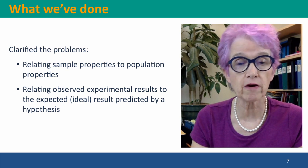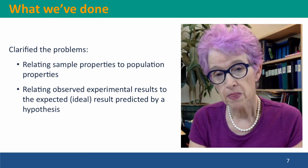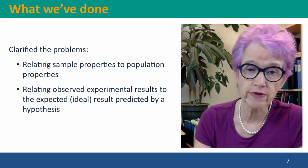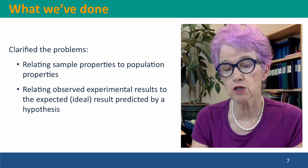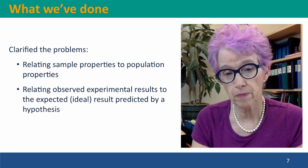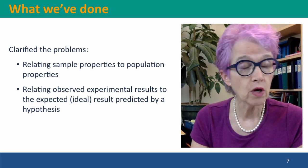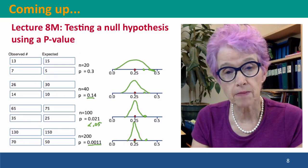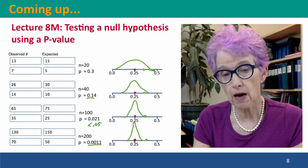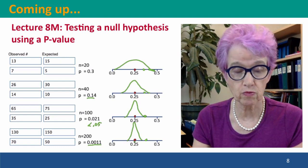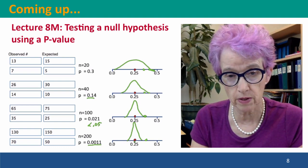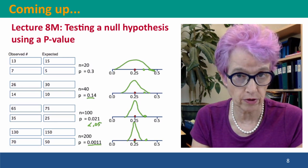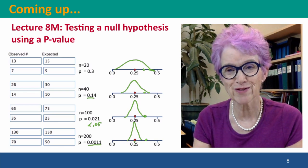So what we've done is to clarify the problem. We've related sample properties to population properties and observed experimental results to expected results from a hypothesis or to the properties of a larger population. And coming up next, we're going to talk about how you can test whether the results of your small experiment are consistent with a particular hypothesis or not. I hope to see you there.